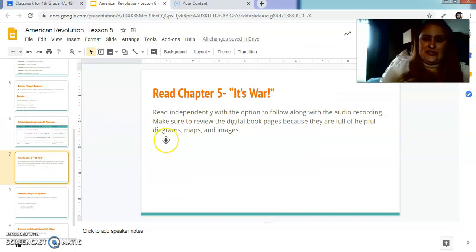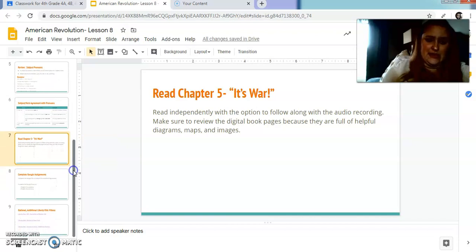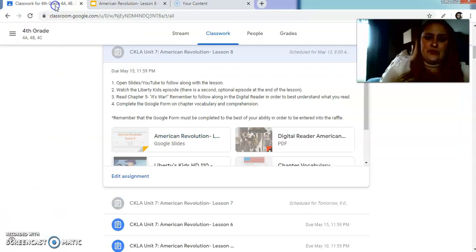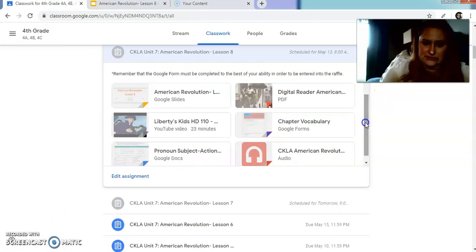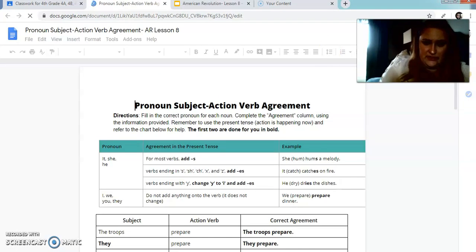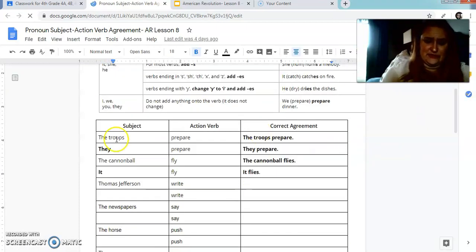So again, you're going to read chapter five. It's war. Make sure if you're using the audio, you do follow along to see the diagrams and the images. Then you're going to complete the Google assignment. So the Google doc is on subject pronoun verb agreement. So you're going to complete that. It looks like this. Right there. And I have the chart up there for you to help you. And I did the first ones for you. So the troops, I'm just changing whatever the original noun was to a pronoun. And then I'm rewriting it down here. It's pretty easy.